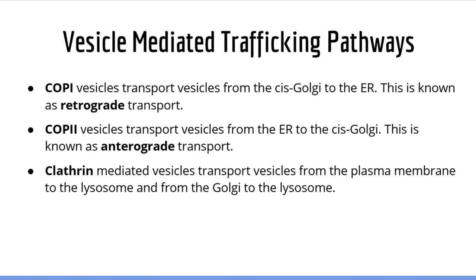You need to be familiar with the functions of each of the three main coat proteins. COP1-coated vesicles transport vesicles from the cis Golgi to the endoplasmic reticulum — this is known as retrograde transport. COP2-coated vesicles transport vesicles from the endoplasmic reticulum to the cis Golgi — this is known as anterograde transport. Finally, clathrin-coated vesicles transport vesicles from the plasma membrane to the lysosome or from the Golgi to the lysosome.